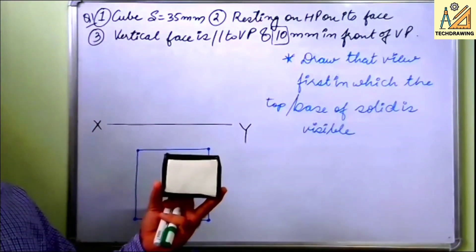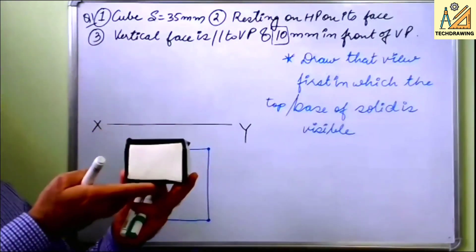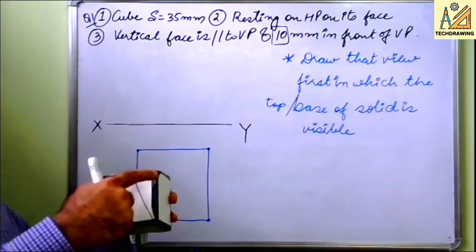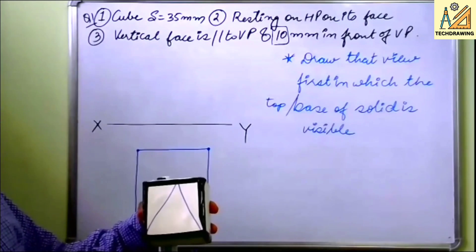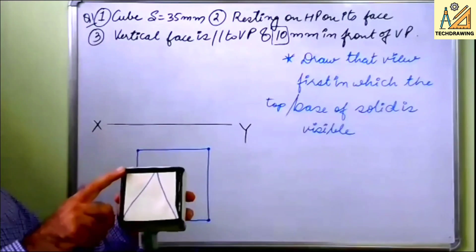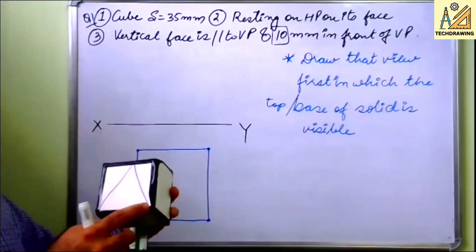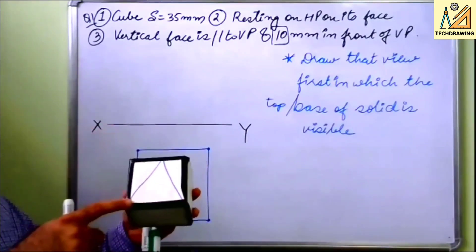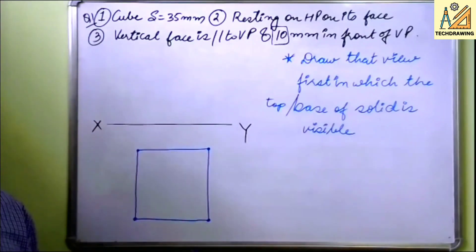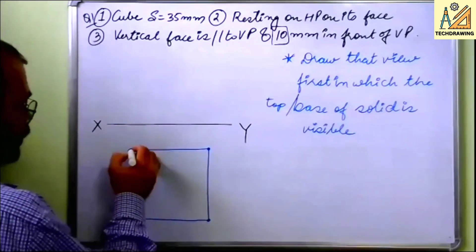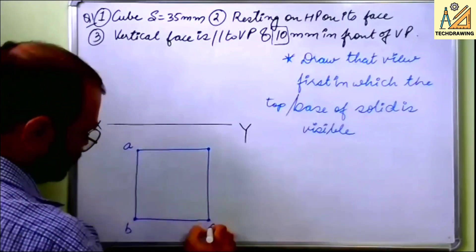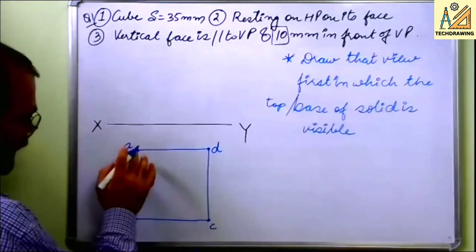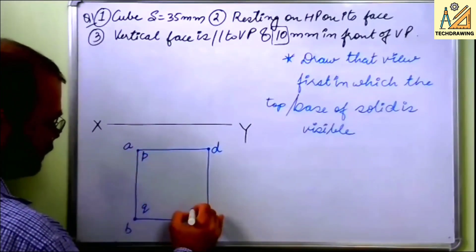Now you have to understand the naming. All these solids: there is a top and a base. Let us say the top corners are A, B, C, and D, and the base corners are also A, B, C, D. Then the top is A, P, B, Q, C, R, D, S — so P, Q, R, S are the base corners. When viewing from the top, A and P coincide, B and Q coincide, C and R, D and S. In the top view, the outer label is the top corner and the inner label is the base corner below it.